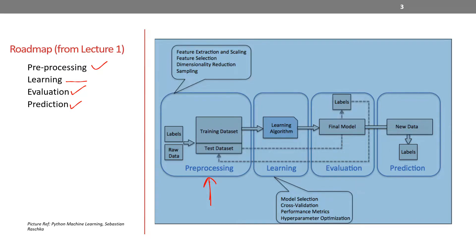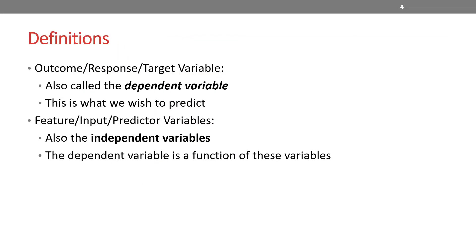Data preprocessing begins with importing data, importing libraries, and then creating feature vectors. Before we get started with that, I want to talk about what exactly a feature vector is, and what dependent and independent variables are. We need to be familiar with these definitions because we're going to use them a lot going forward.